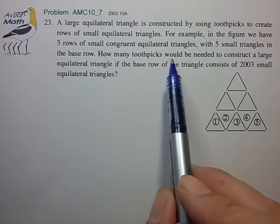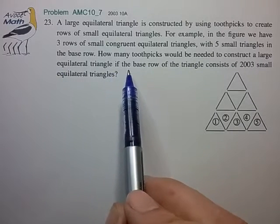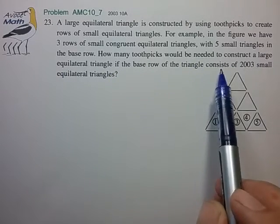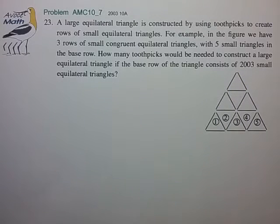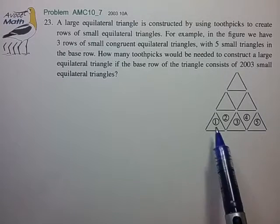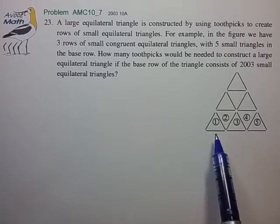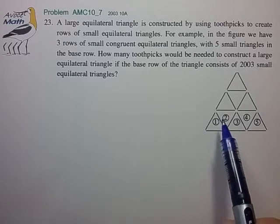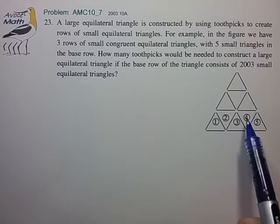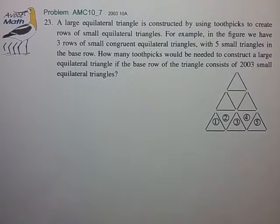How many toothpicks would be needed to construct a large equilateral triangle if the base row of the triangle consists of 2,003 small equilateral triangles? So it's a bit wordy but basically this problem comes down to counting all the toothpicks in this figure where we have a much larger extended figure with 2,003 of these smaller equilateral triangles along the base.